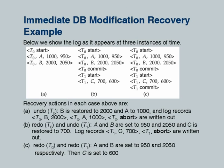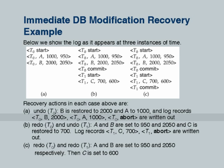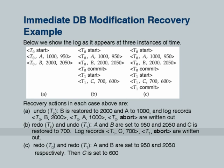Here is a small example of a log at three points in time showing what recovery actions are taken. In the first case, T0 is incomplete, so we undo T0: restore B to 2000, A to 1000, and write log records T0 B 2000 and T0 A 1000, then T0_abort. In the second case, we redo everything and then undo T1, restoring C and writing T1 C 700 and T1_abort. In the third case, both transactions are fully redone.